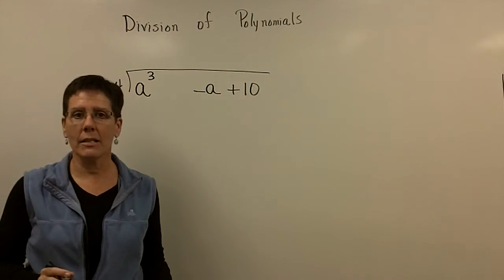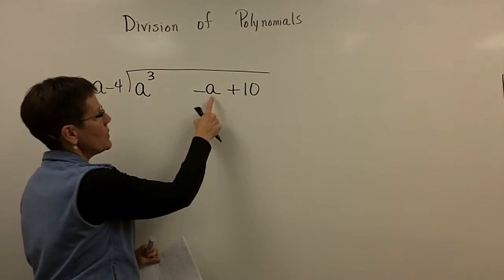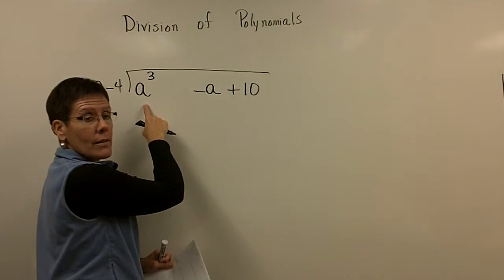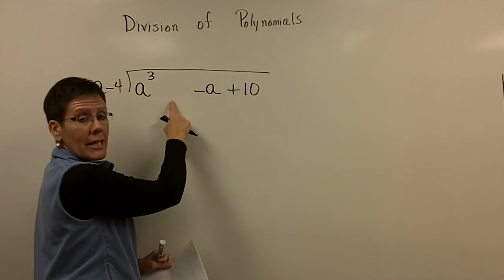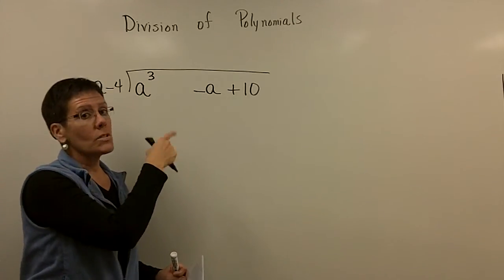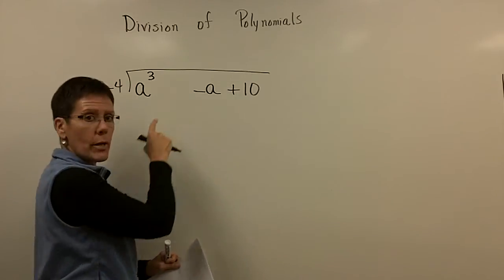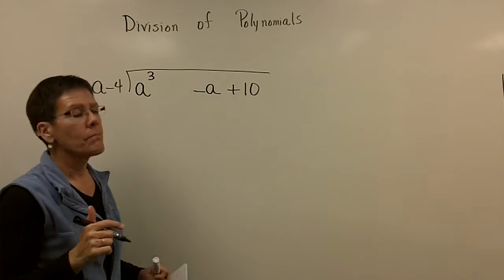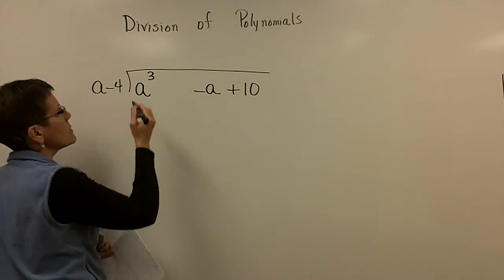Would you notice that I kind of left a little hole here? I'm going to explain that in a minute. I did not put the a to the first next to the a to the third. I left room for an a squared. I sometimes call it a ghost space. Or sometimes I even put 0 a squared right there to hold room in case an a squared term shows up.